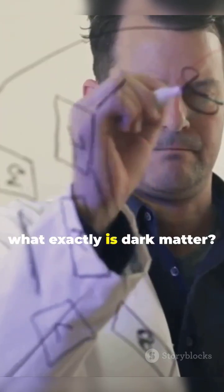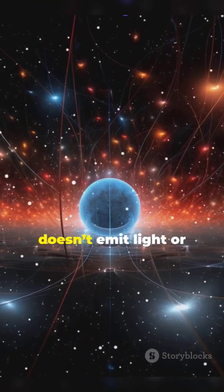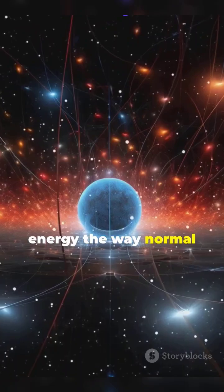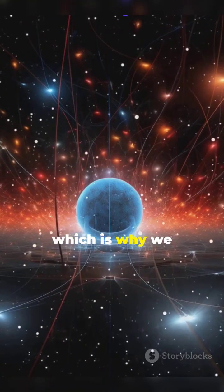So what exactly is dark matter? It's an invisible substance that doesn't emit light or energy the way normal matter does, which is why we can't see it.